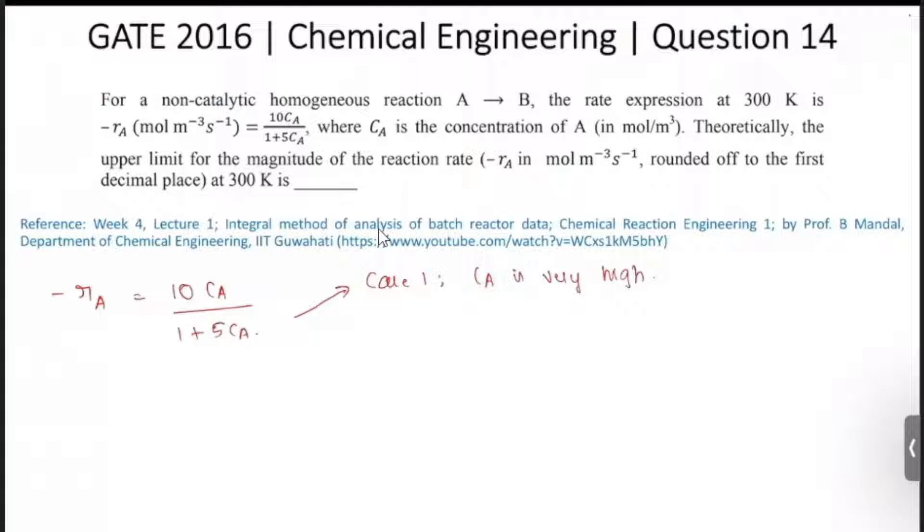So in case 1, since C_A is very very high, the term in the denominator 5 C_A will be very very greater than 1, so we can neglect this 1. So the reaction rate will become minus r_A is equal to 10 C_A by 1 plus 5 C_A. This 1 gets neglected and that will be 10 C_A by 5 C_A, and this will be 2.